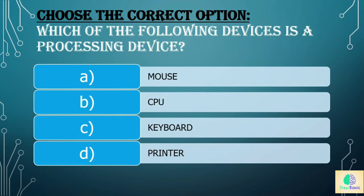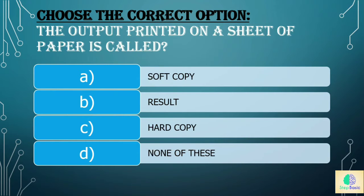Question three: which of the following devices is a processing device? Options are a) mouse, b) CPU, c) keyboard, and d) printer. The answer is b) CPU. Question four: the output printed on a sheet of paper is called — options are a) soft copy, b) result, c) hard copy, d) none of these — and the answer is c) hard copy.